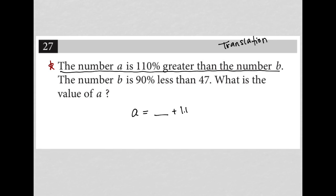So here's how we interpret 110% greater than the number B. I have B, and I have an additional 110% greater than B, which is 1.1B. So in essence, this becomes A equals 2.1B.